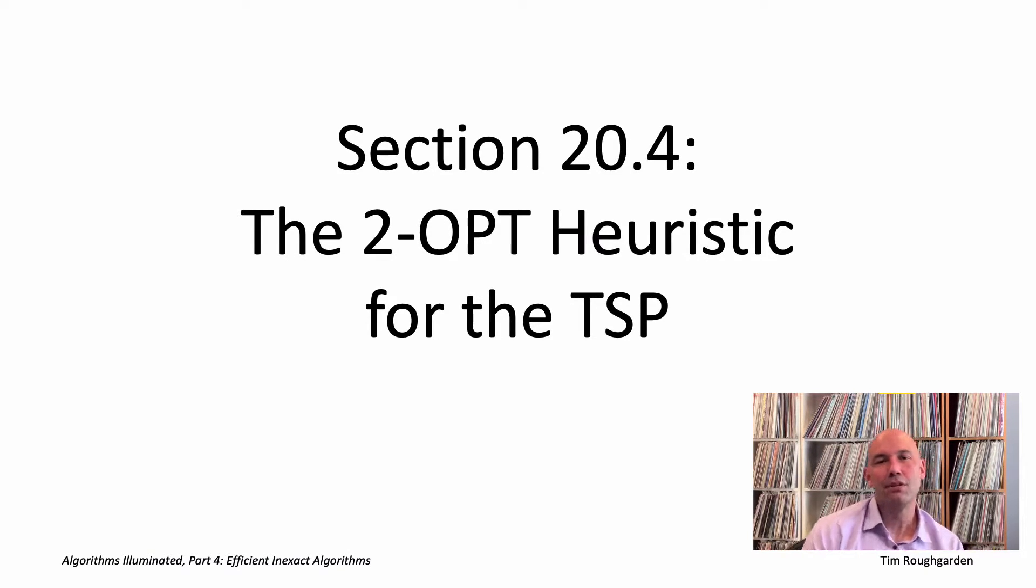NP hardness is always a drag, but at least in those last few problems we studied - makespan minimization, maximum coverage, and influence maximization - we did have fast heuristic algorithms that enjoyed approximate correctness guarantees, that had an insurance policy.